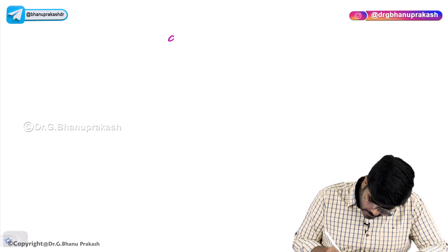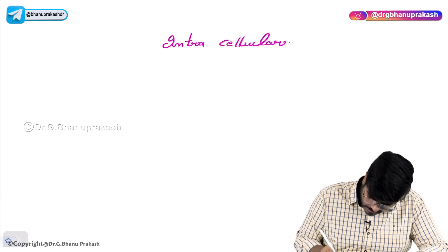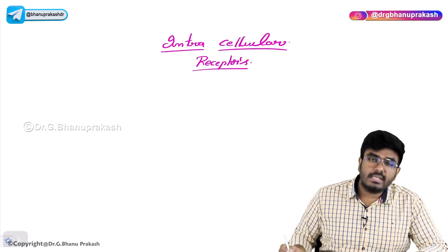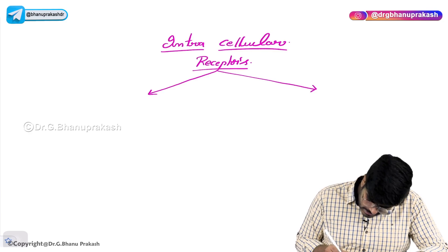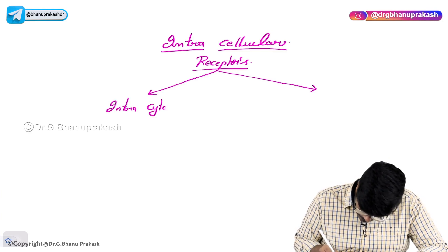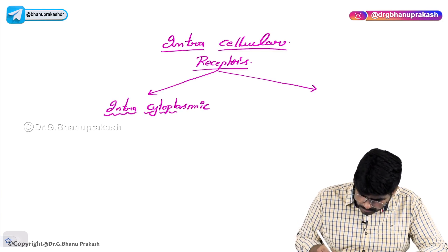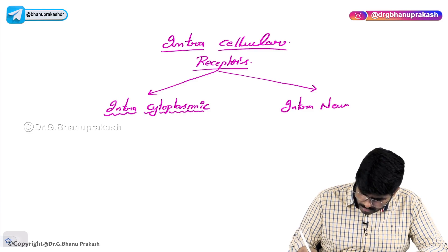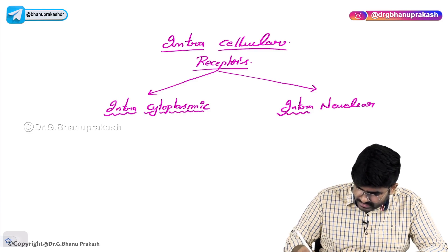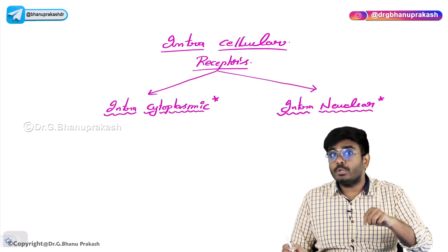Welcome back. In this video, let us discuss intracellular receptors. Intracellular receptors can be of two types: intracytoplasmic, which are receptors present in the cytoplasm, or intranuclear, which are receptors present inside the nucleus. So two types of intracellular receptors are possible — intracytoplasmic or intranuclear receptors.